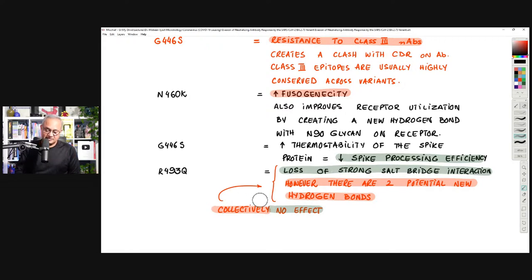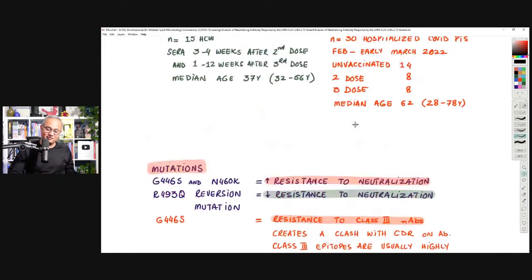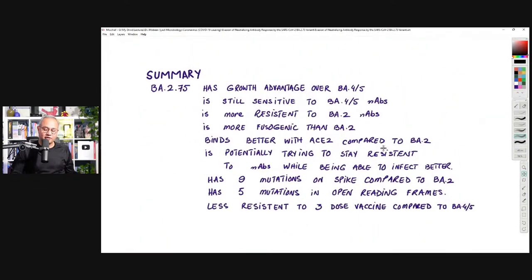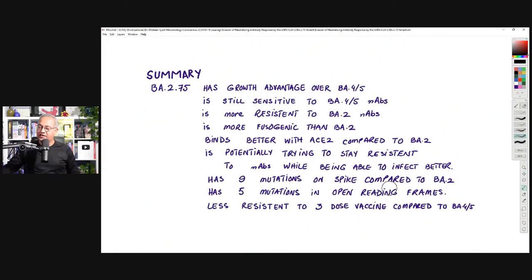Then there is this 493Q change. And that change 493, that however, has two potential new hydrogen bonds. So, on one end, there is a loss of binding and then there is a gain of binding. So, overall, the effect is nothing. So, you will be totally fine if you said, so, what is the takeaway? The takeaway is very slight growth advantage, number one.